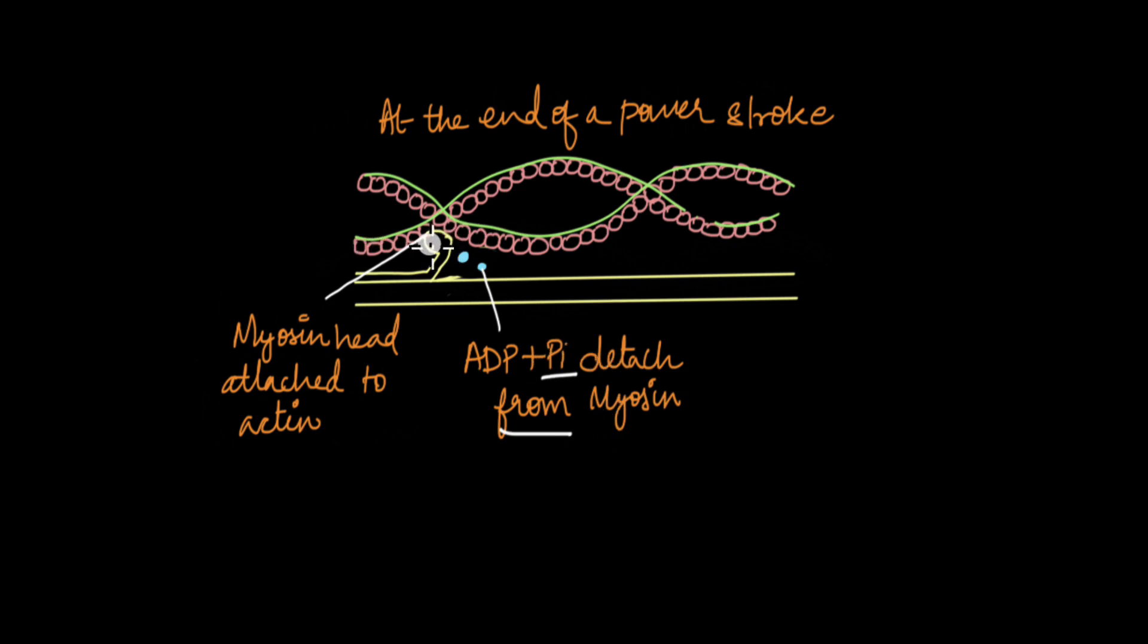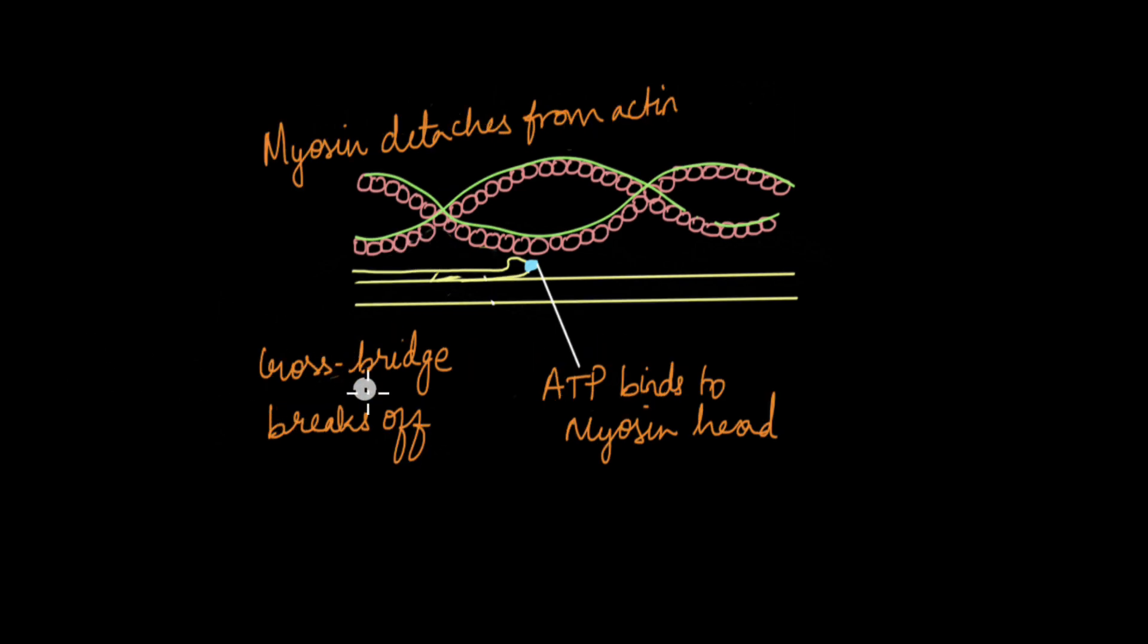For myosin to completely detach from actin, it needs the input of energy. So for the cross bridge to break off, ATP needs to bind to myosin head. And when it does, the myosin detaches completely from actin. This is why when a person dies, their muscles become stiff in a condition known as rigor mortis.